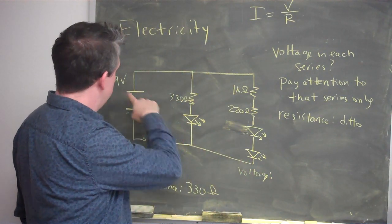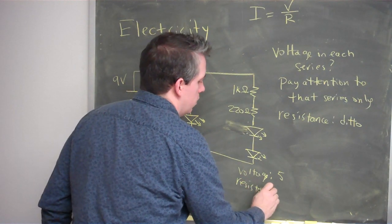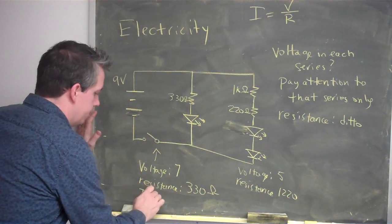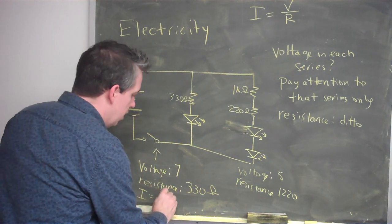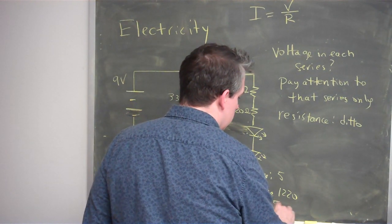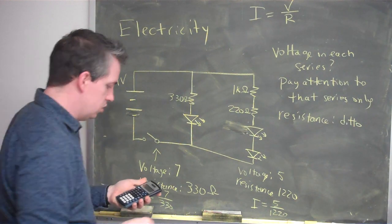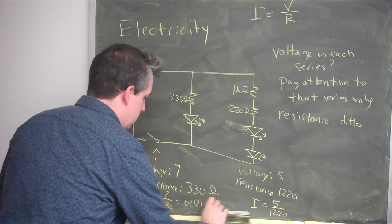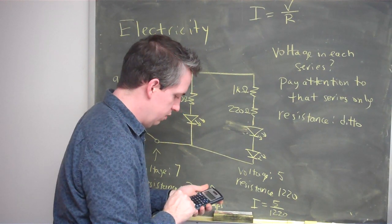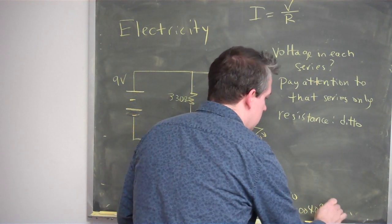For this first path, the voltage is 9 minus 1 LED light bulb, so 9 minus 2 equals 7 volts. The resistance is 330 ohms. For the second path, the voltage is 9 minus 2 minus 2, so 5 volts. And the resistance is 1,000 plus 220, so 1,220 ohms. For each path you can compute the current: for the first, I equals 7 divided by 330. For the second, I equals 5 divided by 1,220. That gives 0.021 amps for the first path, and 0.0041 amps for the second path.